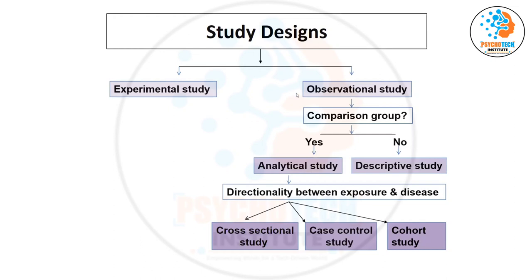Now the second main possibility: you have some intervention and want to see its effect. Experimental study design is always analytical because you want to see the effect of something, so a comparative group is necessary. If you want to see the effect of an intervention, there must be two groups — one group receives the intervention and the other receives a different intervention or a placebo.